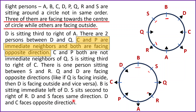D and S face the same direction. In Case 1, D is facing outside so S will also face outside. In Case 2, D is facing inside so S will also face inside. D and C face opposite directions — in Case 1, D is facing outside and C is facing inside; in Case 2, D is facing inside and C is facing outside. This checks out correctly.